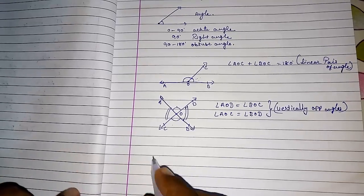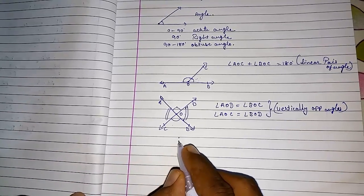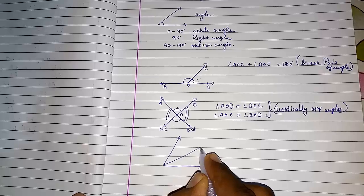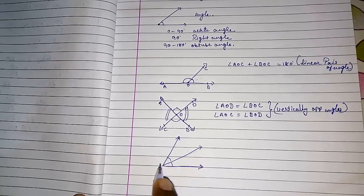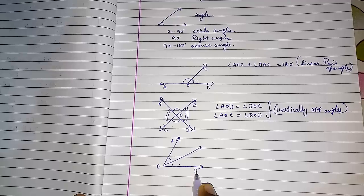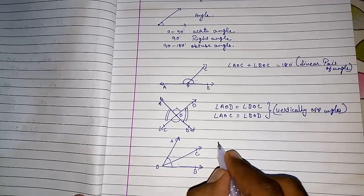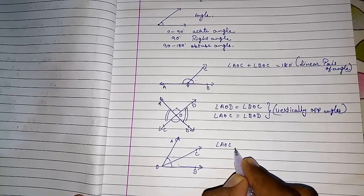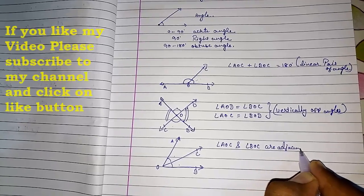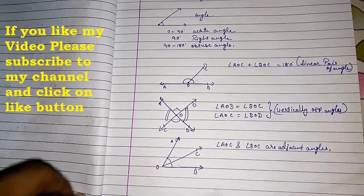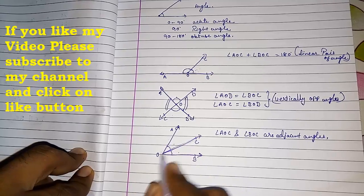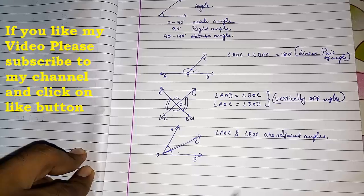Adjacent angles are two angles that share a common arm. For example, with points A, O, B, and C, angle AOC and angle BOC are adjacent angles because they share the common arm OC. Two angles having a common arm are called adjacent angles.